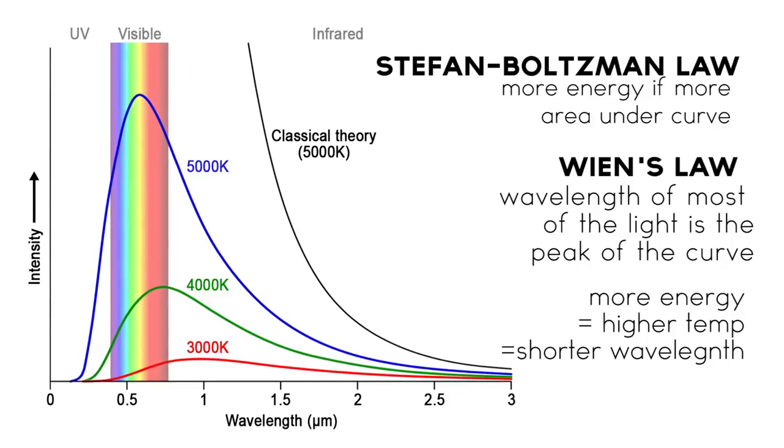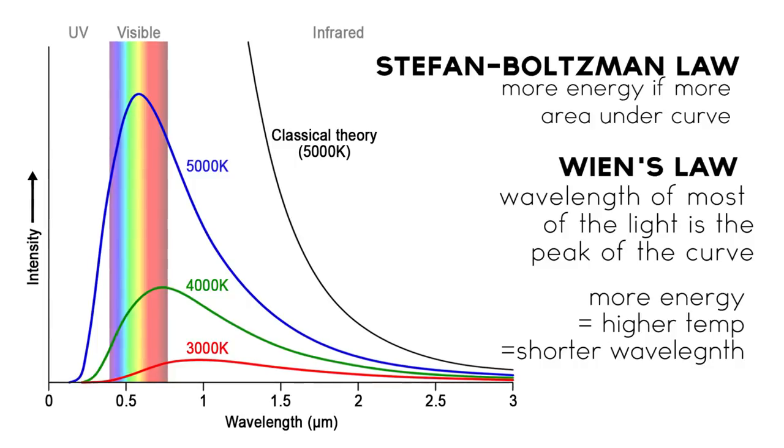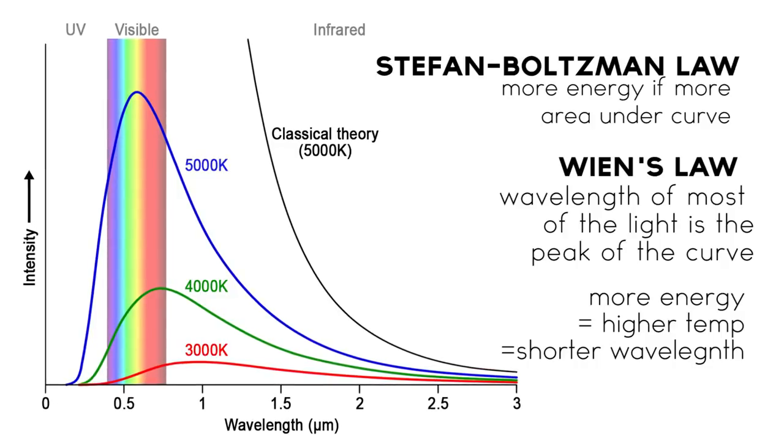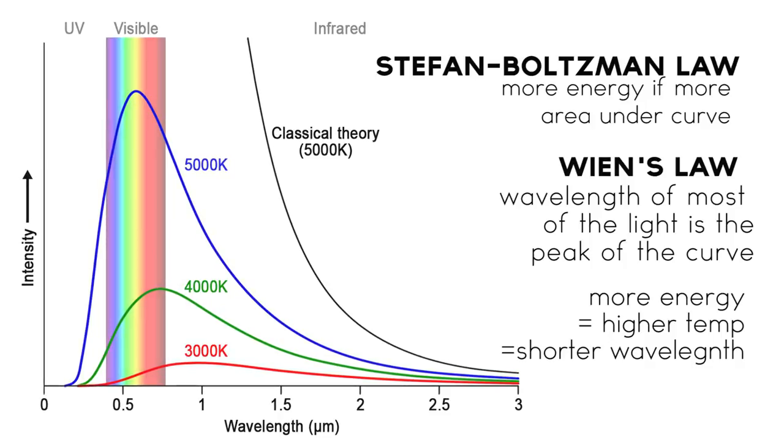Wien's law identifies the wavelength of light at which the most light is produced, seen here as the wavelength at the peak of the curve. As a black body's temperature is increased, the total amount of light energy emitted increases and the peak wavelength moves to a shorter wavelength of light.